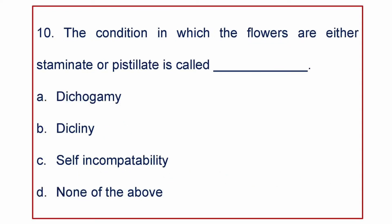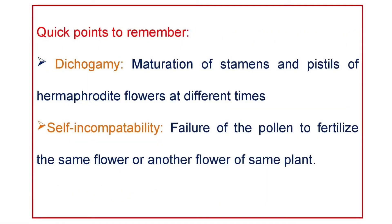Next question: the condition in which flowers are either staminate or pistillate is called — A) Dichogamy, B) Dicliny, C) Self-incompatibility, or D) None of the above. The answer is Dicliny. Important terms: Dichogamy is the maturation of stamens and pistils of hermaphrodite flowers at different times; Self-incompatibility is the failure of pollen to fertilize the same flower or another flower of the same plant.